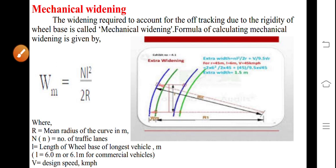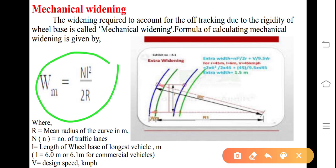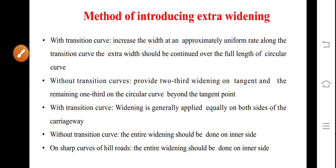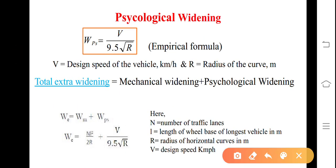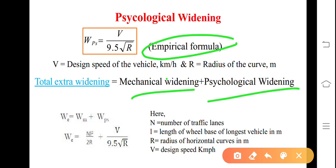Psychological widening is given by the IRC empirical formula: Wps = v / (9.5 × √R), where v is the design speed in km/h and R is the radius of the curve. The total extra widening is: We = nl² / (2R) + v / (9.5 × √R), combining mechanical and psychological widening components.